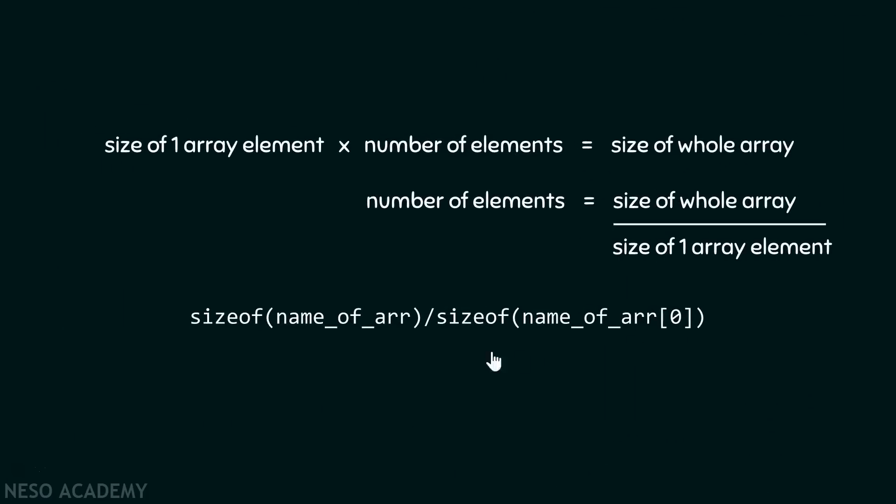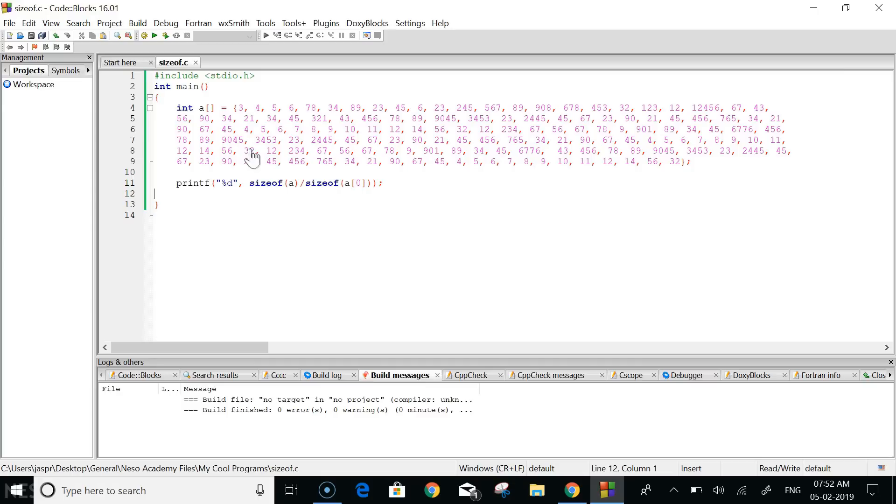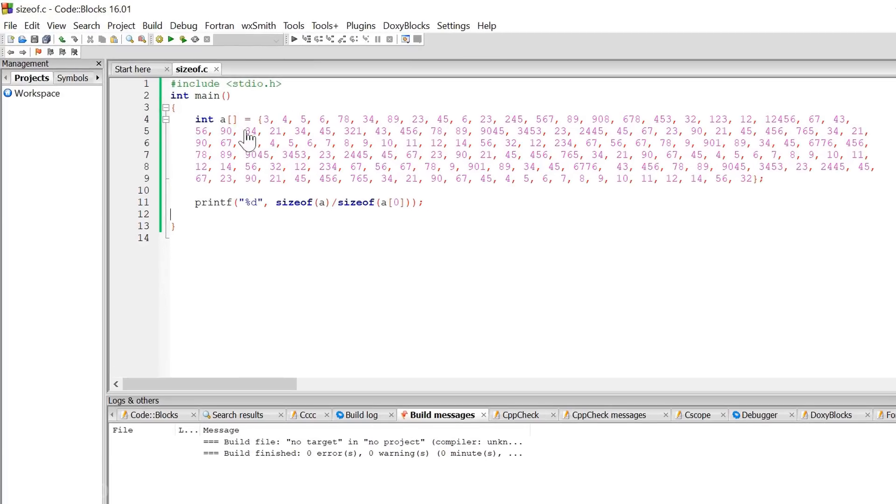Now with the help of the code, let's see whether this sentence helps us in calculating the number of elements or not. Here you can see the array that we have seen in the first slide, right? With the help of this printf function, we want to print the number of elements that are contained in this array. And we can calculate the number of elements with the help of this sentence: sizeof(a) divided by sizeof(a[0]).